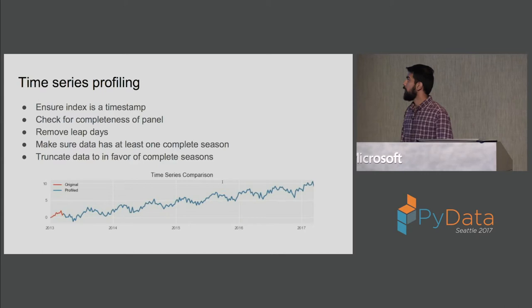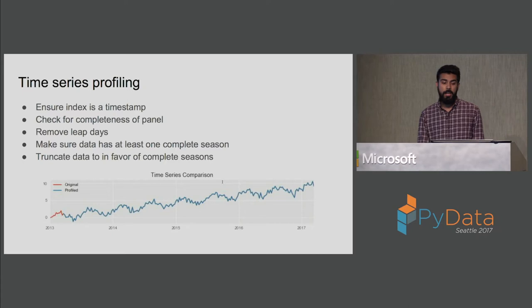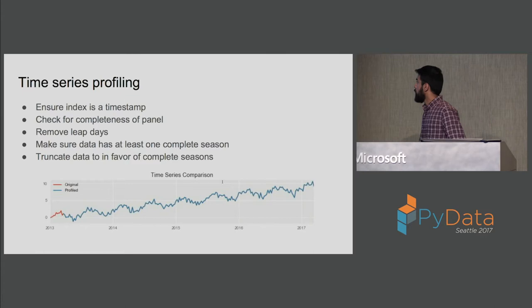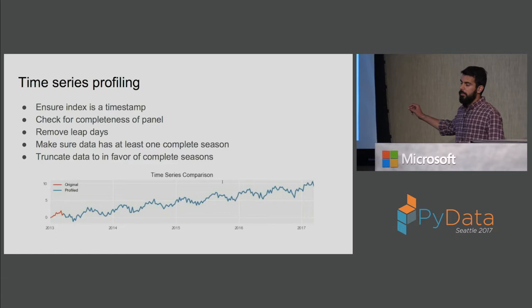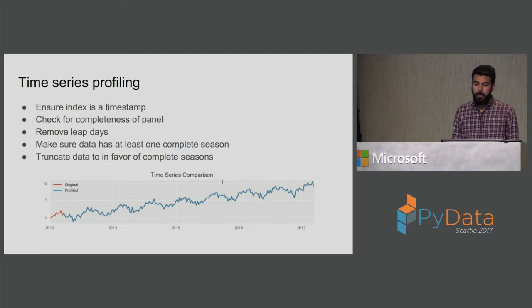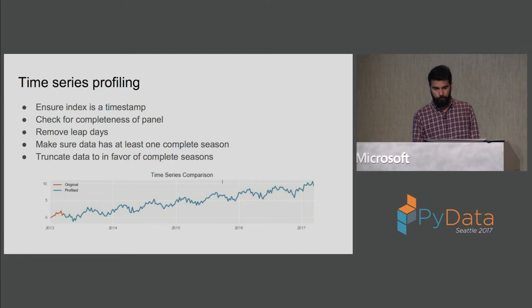To demonstrate that — in this graph, red reflects the original time series and blue reflects the profiled time series. There's some data after 2017 that, if dealing with daily data, doesn't seem like a complete season, so we try to get rid of that extra data. Rather than getting rid of data from recent history, we get rid of data from the past, because recent observations are more useful to make future predictions.